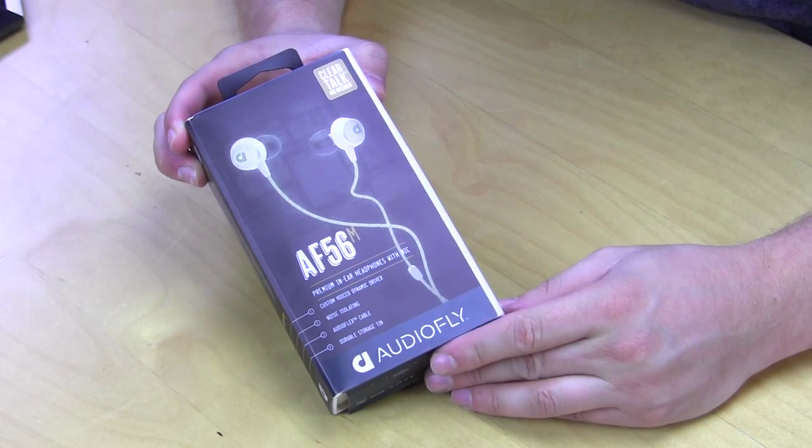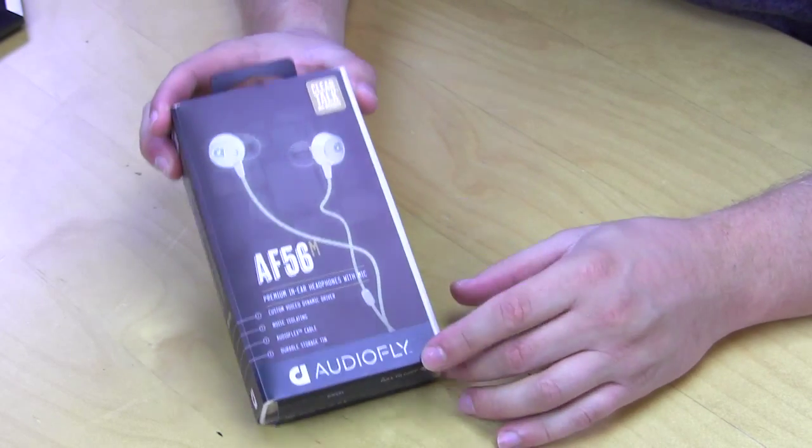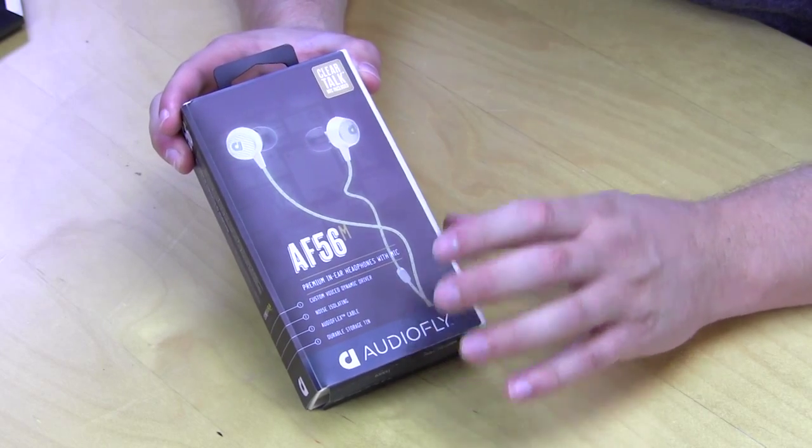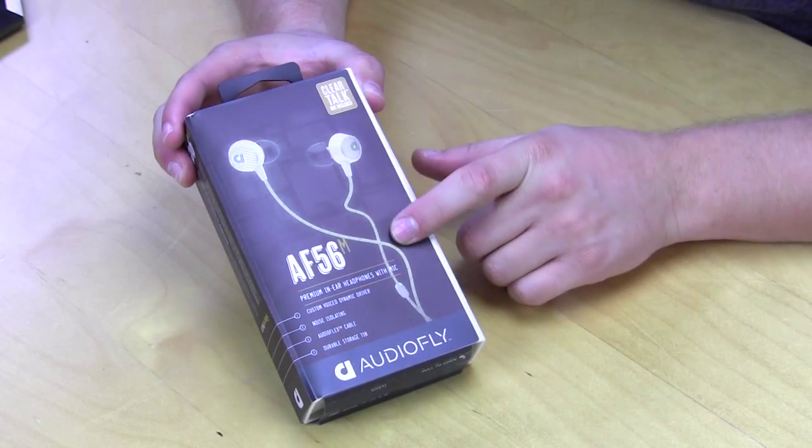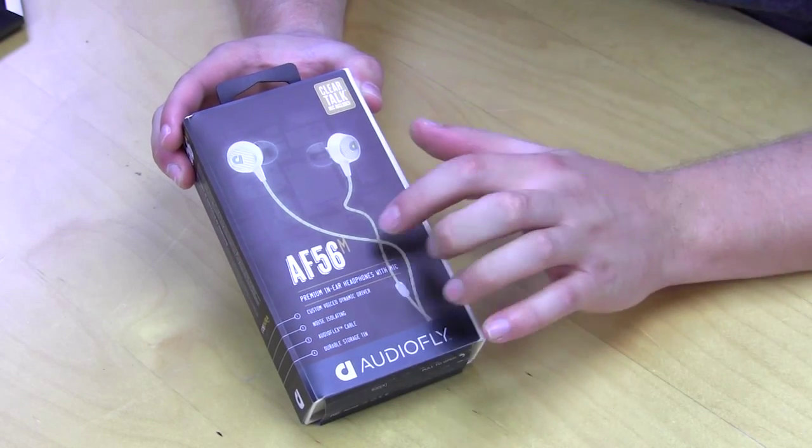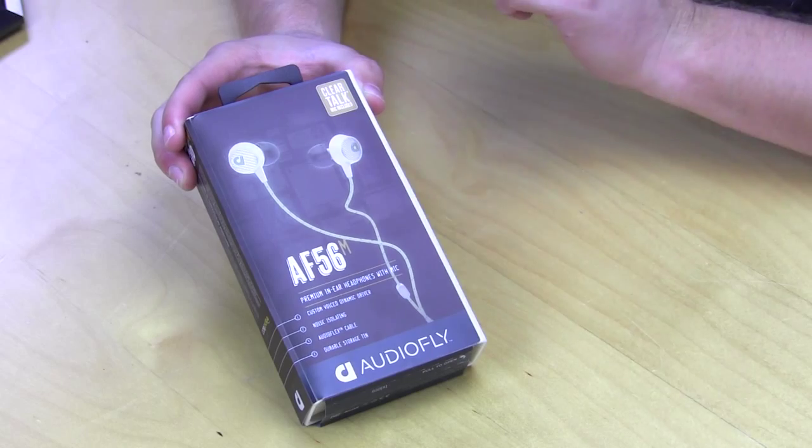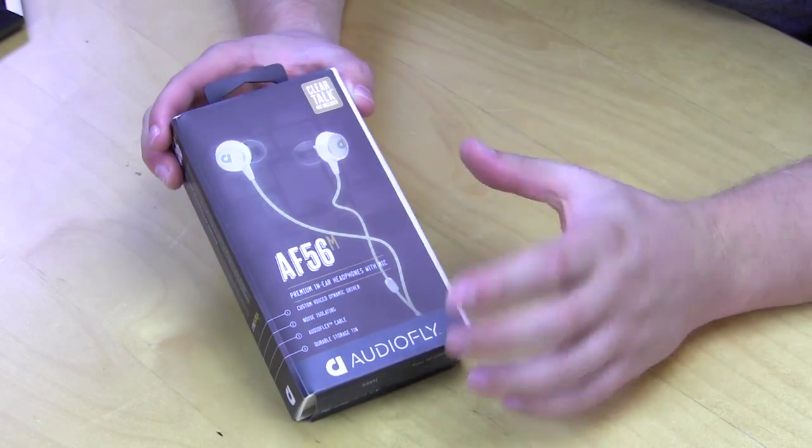The AF56Ms come in this nice AudioFly packaging. We saw with the AF78s, the retail packaging is actually really nice. On the front you have a picture of the actual headset and some of the main features. This is the M version and the M version means that it comes with the inline mic for your mobile device which is really cool.